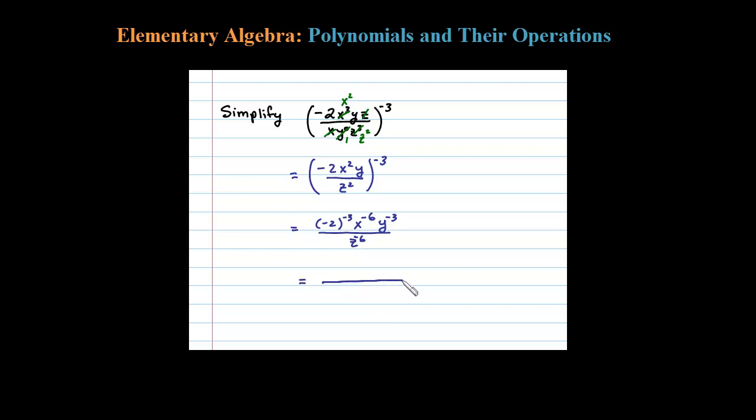Then we'll go ahead and take care of our negative exponents. Negative 2 to the negative 3 power tells me I can write this negative 2 to the third in the denominator. X to the sixth, y to the third in the denominator, and then finally z to the negative 6 can be written in the numerator as z to the positive 6 power.